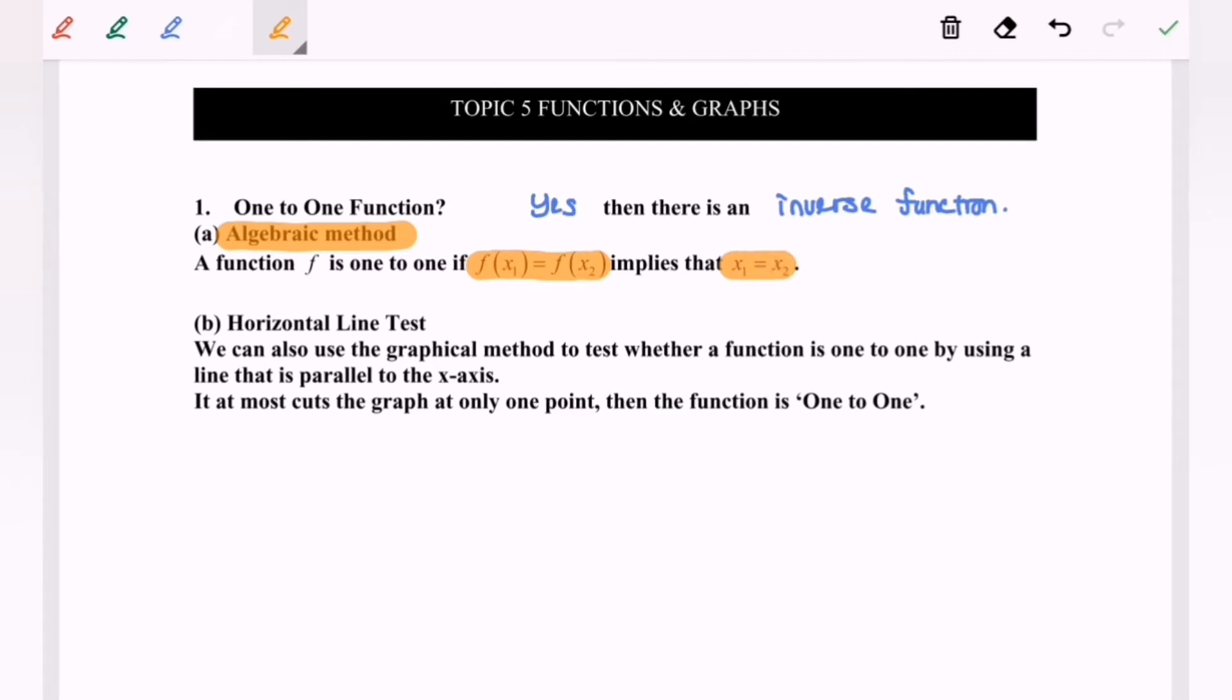Method number two, horizontal line test. We can also use the graphical method to test whether a function is one-to-one or not, by using a line that is parallel to the x-axis, or we can say a horizontal line test.